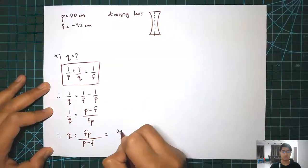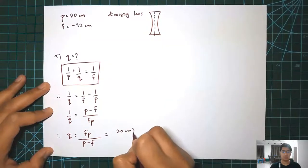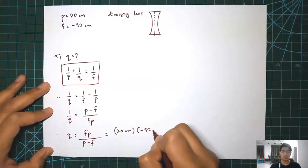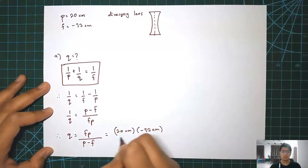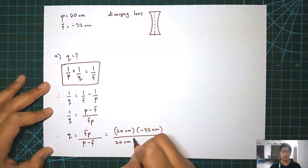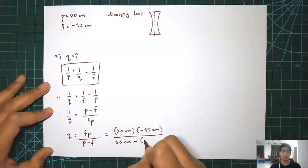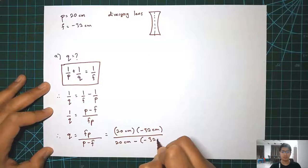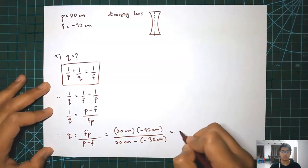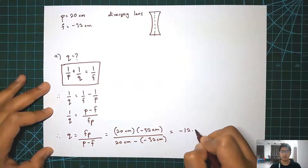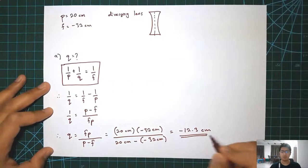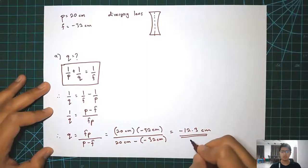Then you need to insert the value for each parameter: negative 32cm times 20cm divided by 20cm minus negative 32cm. So it becomes negative 12.3cm.